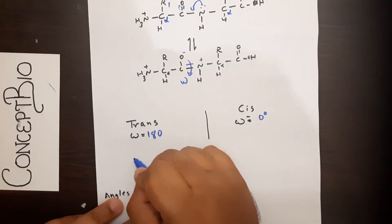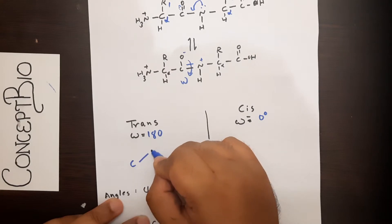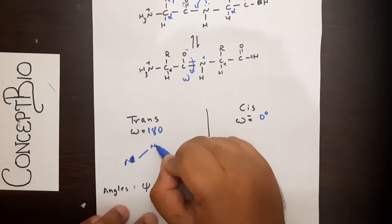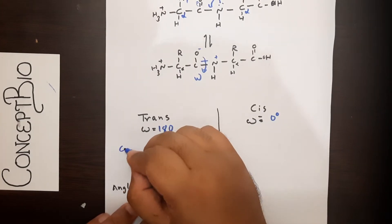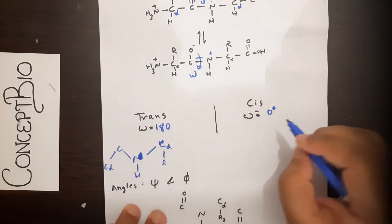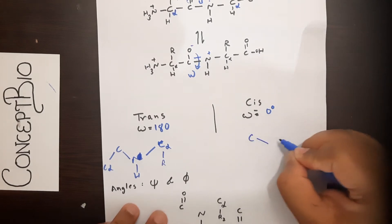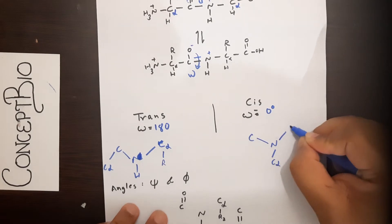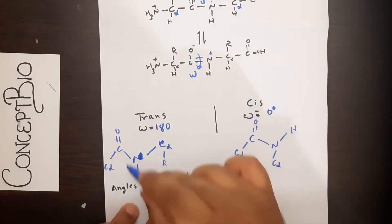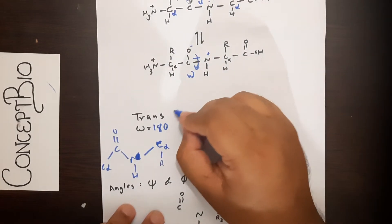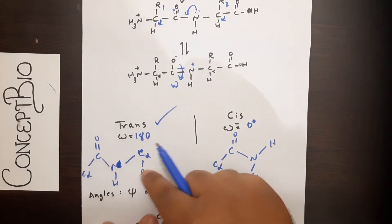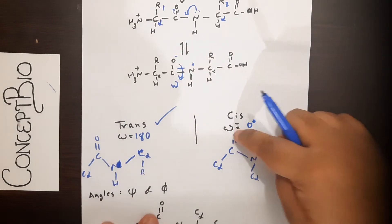If the omega angle is at 180 degrees we call it a trans structure, and if it's at 0 degrees we call it a cis structure. In the trans structure the two C-alpha groups are on opposite sides; in the cis structure they are on the same side. Predominantly in protein structures, the trans configuration always occurs. So the omega angle can only be 0 or 180 degrees — meaning the hydrogen and oxygen are 180 degrees apart or 0 degrees apart.